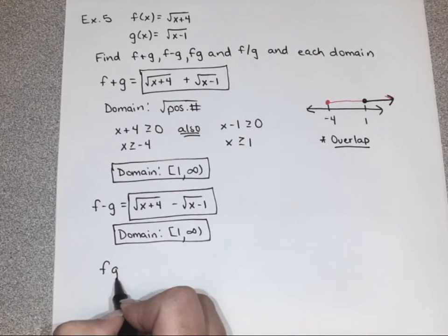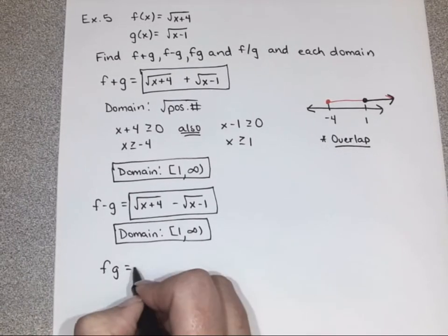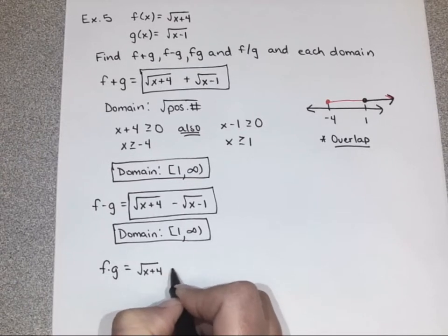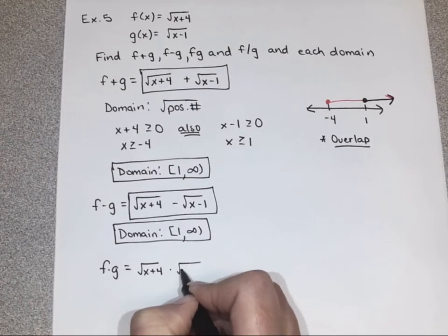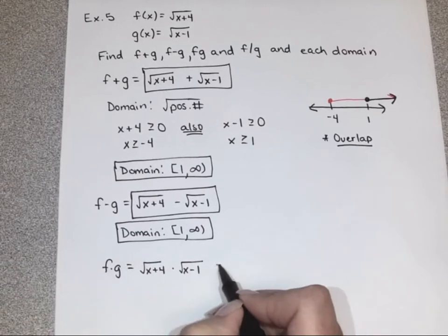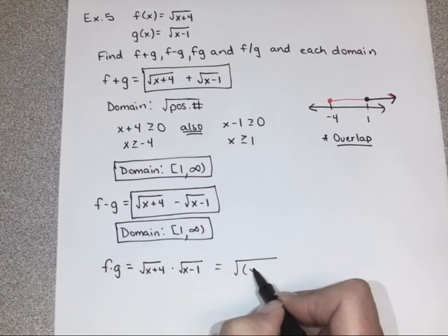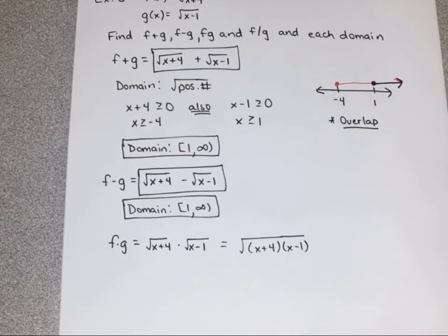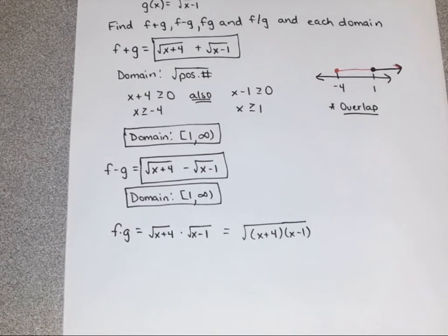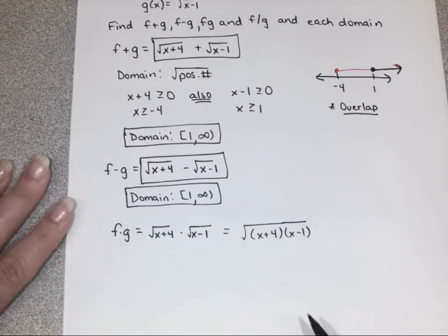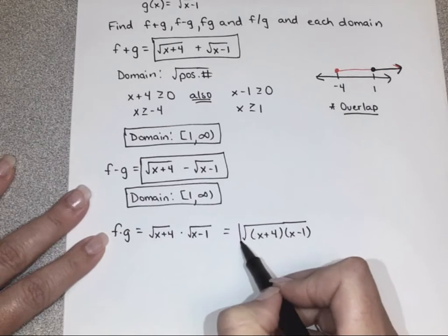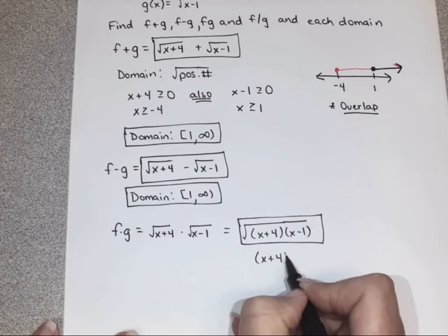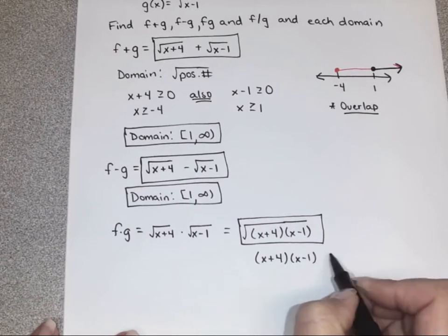Multiplication and division are the most challenging on this one. So for f times g, we want to do square root of x plus 4 times square root of x minus 1. We end up getting the square root of x plus 4 times x minus 1. When you multiply, you are allowed to combine them into one. You could FOIL that, but we're not going to — it's not necessary. The reason we're not going to FOIL it is because we will want to know when this is greater than 0 anyway, so we'll want it in factored form.